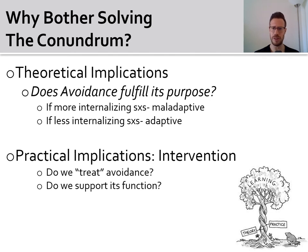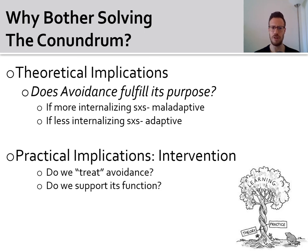Why even bother solving or at least better understanding the conundrum? This may be the case because of two main reasons. First, from a theoretical point of view, we want to know better whether or not avoidance fulfills its purpose. If avoidance is in the service of decreasing internalizing symptoms, we might deem it adaptive. However, if it leads to experiencing more internalizing symptoms, we may deem it maladaptive. This may have direct implications to psychological interventions — in other words, depending on whether or not it's adaptive, we would better understand if we want to treat avoidance such that individuals may exercise less of this deactivating strategy, or maybe we should support the function of avoidance because it actually does a pretty good job in buffering internalizing symptoms.